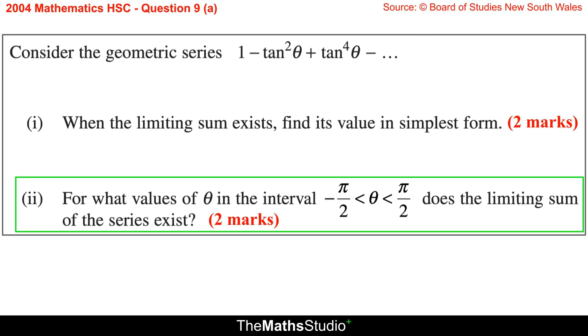Part 2. For what values of theta in the interval negative pi over 2 less than theta less than pi over 2 does the limiting sum of the series exist?